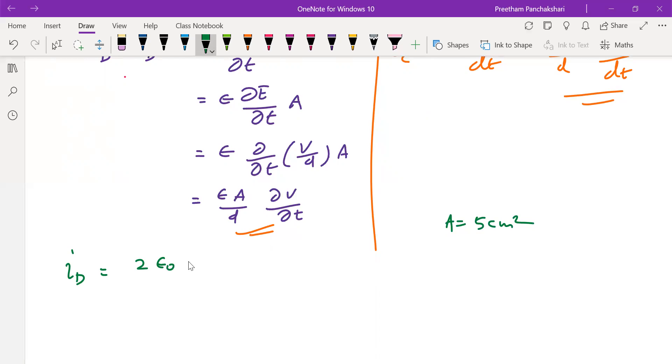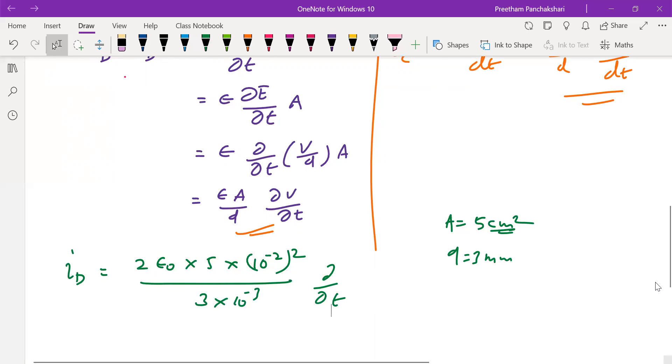Which can be written as five centimeters should be converted to meter. One meter is equal to 10 power minus two centimeters. So in place of centimeter we write 10 power minus two, then it becomes meter. Divided by the distance of separation is three millimeter, that is 3 times 10 power minus three.